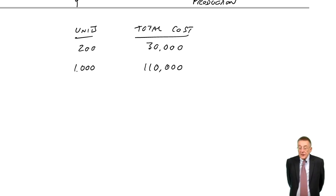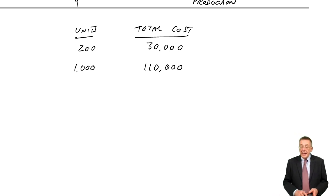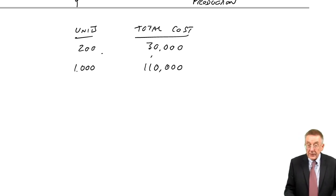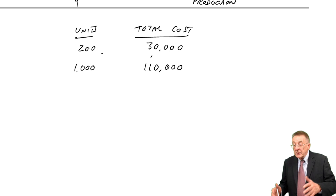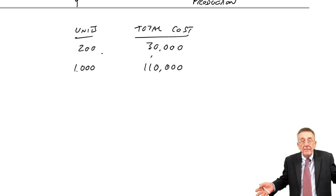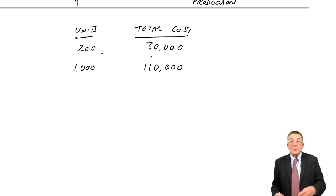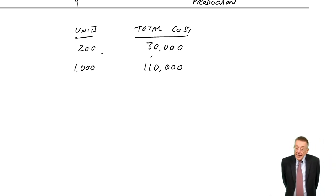Clearly, the cost isn't a fixed cost, otherwise it would be the same each month. However, it's not a truly variable cost either. Because if it was variable, the cost per unit would be the same. 200 for 30,000 would be a cost per unit of 150. On the other hand, 110,000 for 1,000 is a cost per unit of 110. So it's not fixed, it's not variable, it's actually semi-variable. Part of that cost is fixed, maybe 10,000 a month. Part of it is variable, maybe there's a variable cost of $10 a unit. Our job is to calculate what is the fixed cost and what is the variable cost per unit.